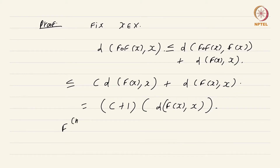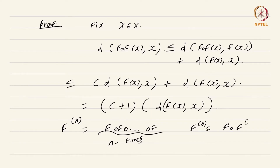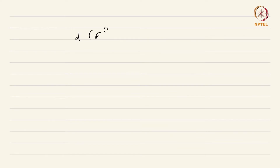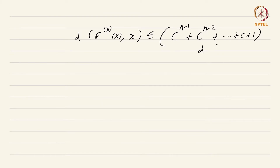Now consider the iteration fⁿ, which is just f composed with f n times. Consider the iterates of f and let us look at d(fⁿ(x), x). By a similar argument, applying induction, you can conclude that this is less than or equal to (cⁿ⁻¹ + cⁿ⁻² + ··· + c + 1)·d(f(x), x). The exact same argument applied for f² by induction immediately gives this.